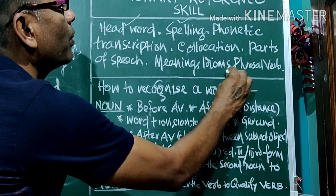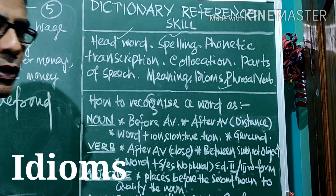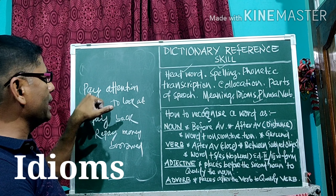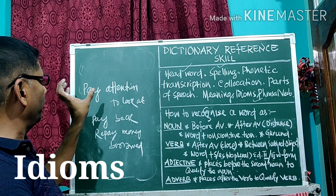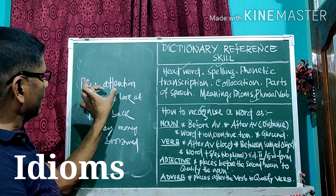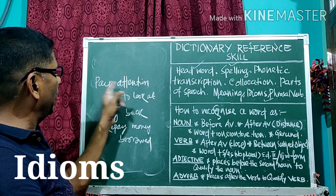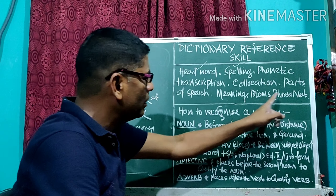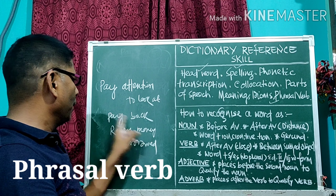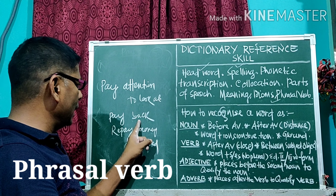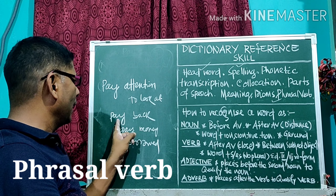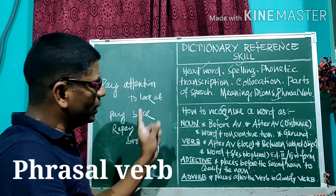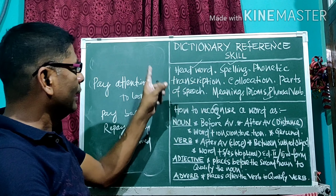Now we will discuss idioms and phrasal verbs. Taking the head word 'pay', we add another word to form an idiom. 'Pay attention' means to look at. Likewise, for a phrasal verb: 'pay' is the head word, and adding 'back' gives 'payback', which means to repay borrowed money. So this is all about phrasal verbs and idioms.